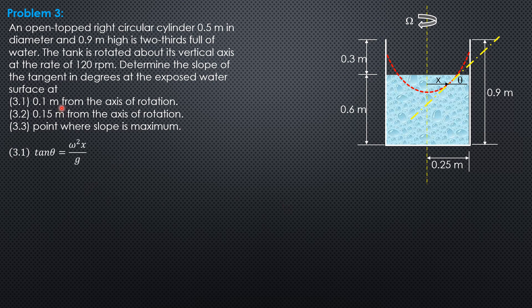So at 0.1 meter from the axis of rotation, tangent of theta 1 equals omega should be converted to radians per second because in this formula, omega is in radians per second. So 120 times pi over 30, so omega is 4 pi radians per second. So substitute tangent of theta 1 equals quantity 4 pi squared times 0.1 over 9.81. So using the calculator, theta 1 is 58.15 degrees.